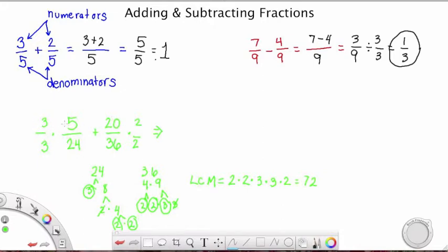Okay, so now we have to rewrite this expression. We're going to take the product of that and put it right here. We have a new equivalency. 3 times 5 is 15, and then 3 times 24 is 72. So 5/24, the equivalent fraction with the denominator 72 is 15/72. And then I need to take the product of this and put it over here. Well, 20 times 2 is 40, and 36 times 2 is 72.